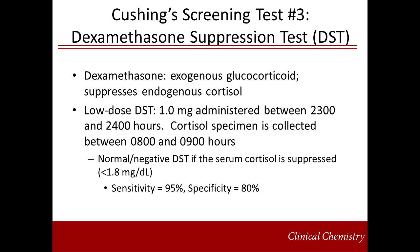In this test, one milligram of dexamethasone is administered at night and serum cortisol is checked the following morning. The normal response would be suppression of cortisol. A generally accepted cutoff is less than 5 micrograms per deciliter, although the cutoff may be lowered to 1.8 micrograms per deciliter to enhance sensitivity. Using a cutoff of 1.8 micrograms per deciliter, the low dose dexamethasone suppression test demonstrates a high sensitivity of 95%, with a specificity of 80%.